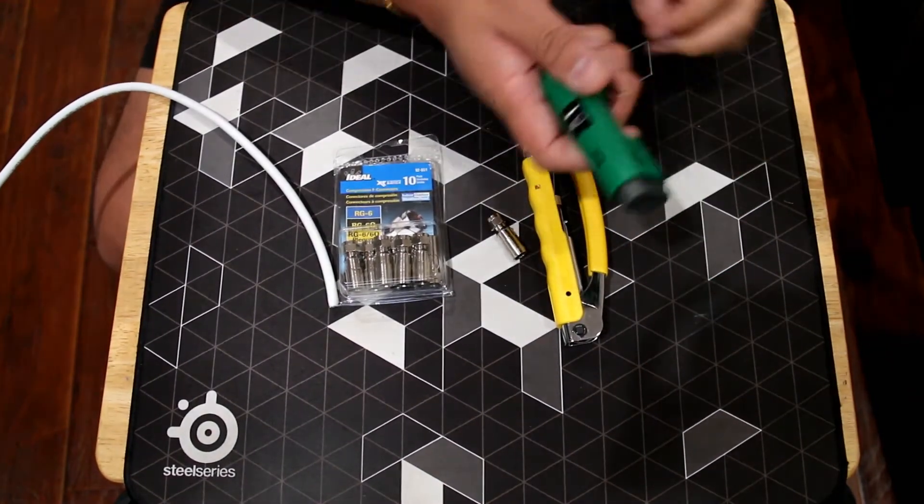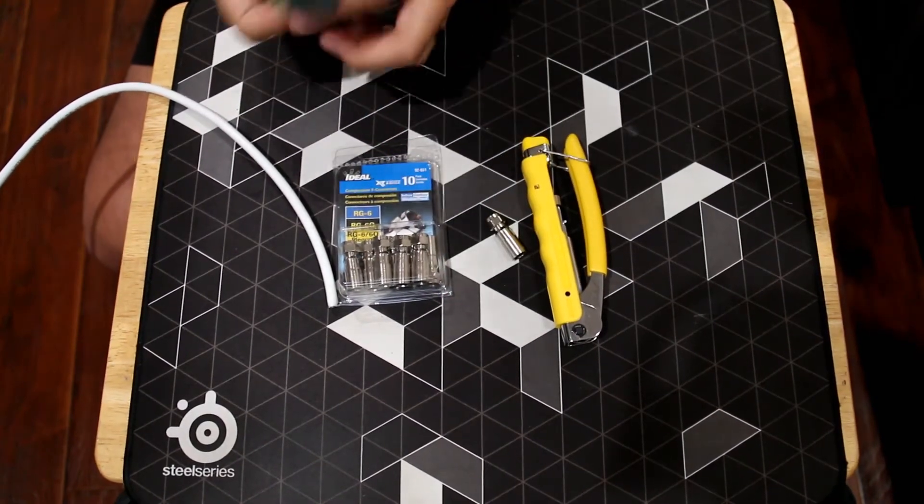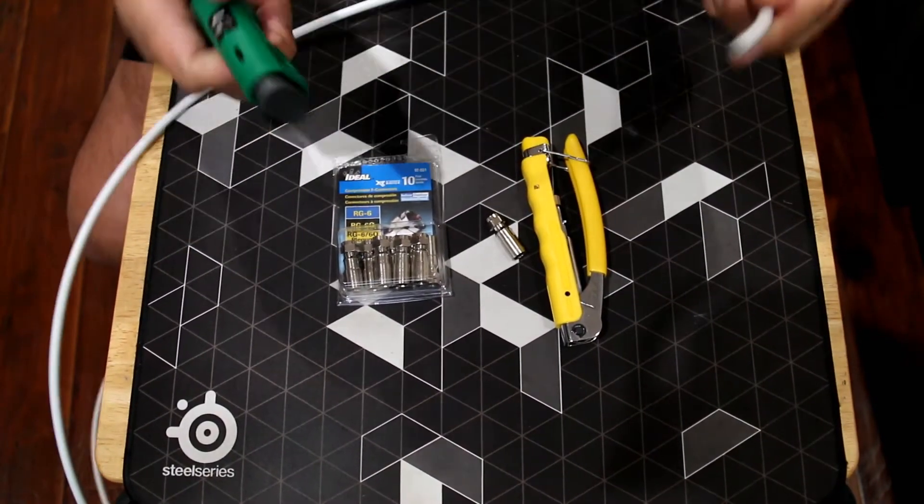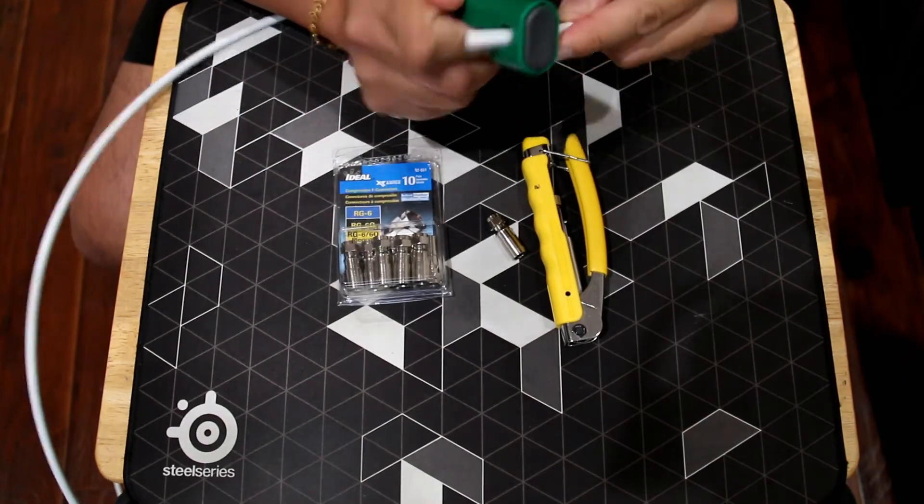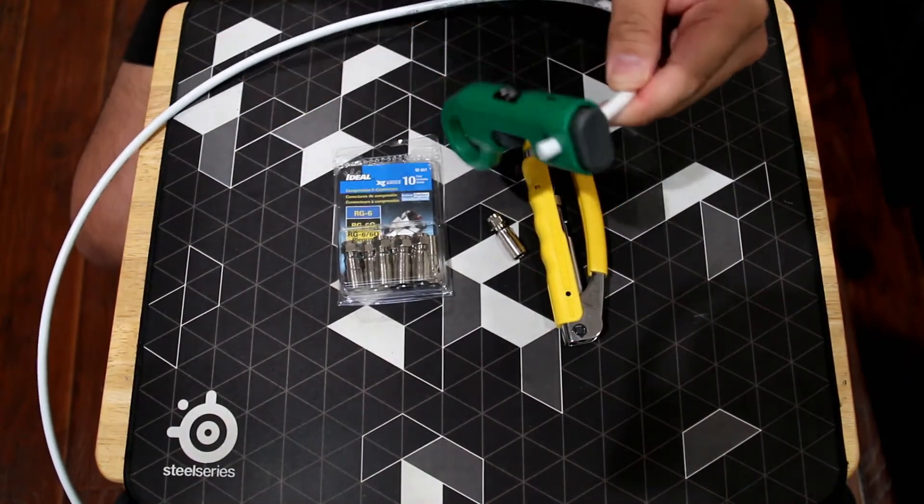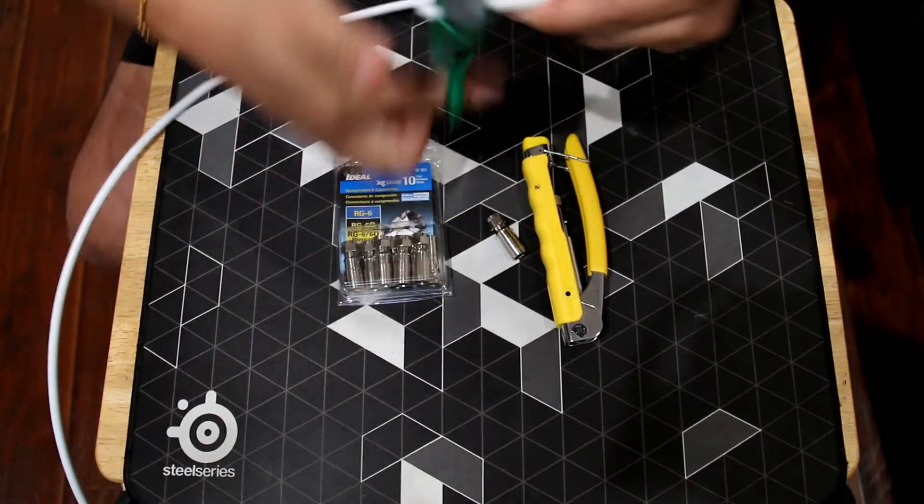The coax stripper has two blades inside it. First, just take the coax cable and insert it into the coax stripper hole. Once you insert it, just release the trigger and spin it around 10 to 15 times.